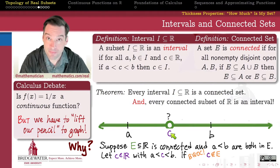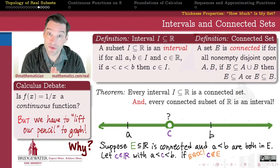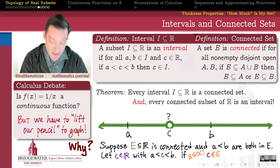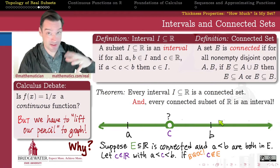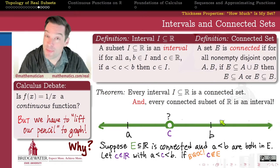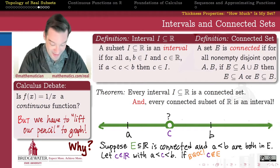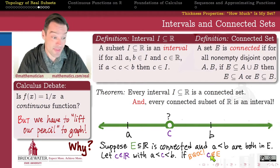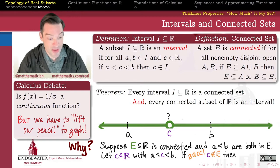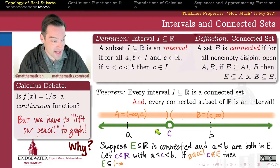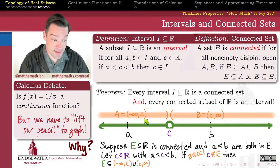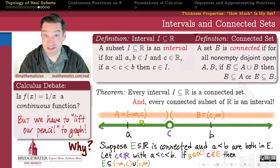If C doesn't belong to my set, then it belongs to the complement of E. And if C belongs to the complement of E, that means every point of E is either going to be less than C or greater than C. This is the law of trichotomy in the total ordering on the real numbers: any pair of real numbers, one is less than the other or greater, or equal. Ruling out equality, every element of E is either strictly less than C or strictly greater than C — meaning every element of E is contained in the open interval from minus infinity to C, or in the open interval from C to infinity. Those two intervals are disjoint open sets.